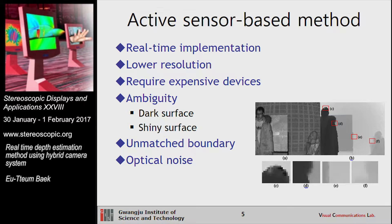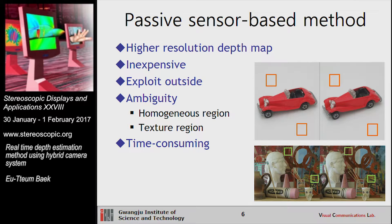Active sensor-based methods can be implemented in near real-time. However, they produce lower resolution than passive sensor-based methods, require expensive devices, and there are many depth ambiguities in flat surfaces, shining surfaces, unmatched boundaries, and optical noise. Passive sensor-based methods can generate higher resolution depth maps and do not require expensive devices and can be used outdoors, but there are depth ambiguities in homogeneous and textured regions, and it is very time-consuming. Hybrid sensor-based methods combine active and passive sensor-based methods to estimate depth.